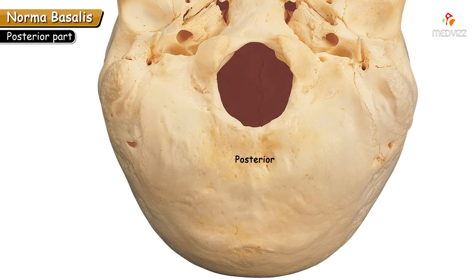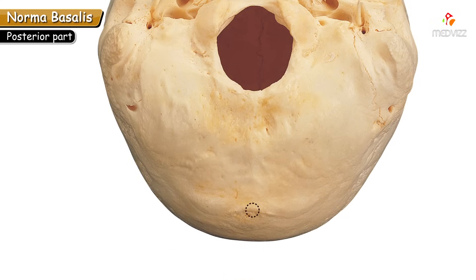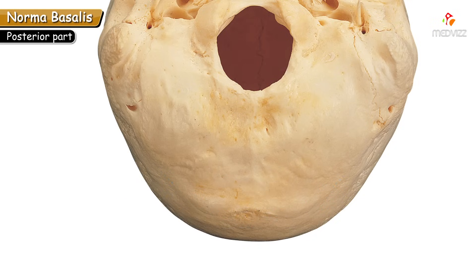The posterior part of norma basalis extends from an imaginary line drawn across the anterior margins of the foramen magnum, which separates it from the middle part. Posteriorly, it extends to the external occipital protuberance. On each side of the external occipital protuberance are arching lines called the superior nuchal lines, which demarcate norma basalis from norma occipitalis.